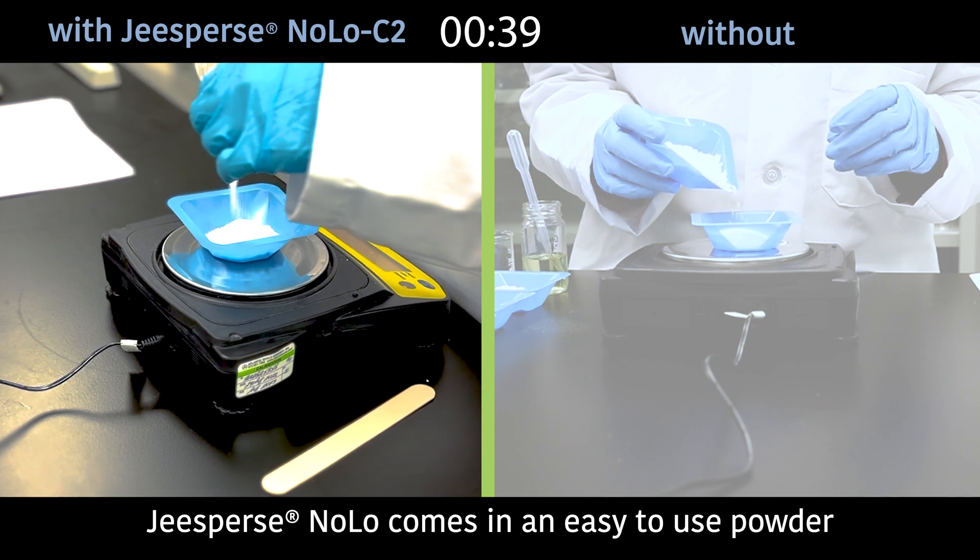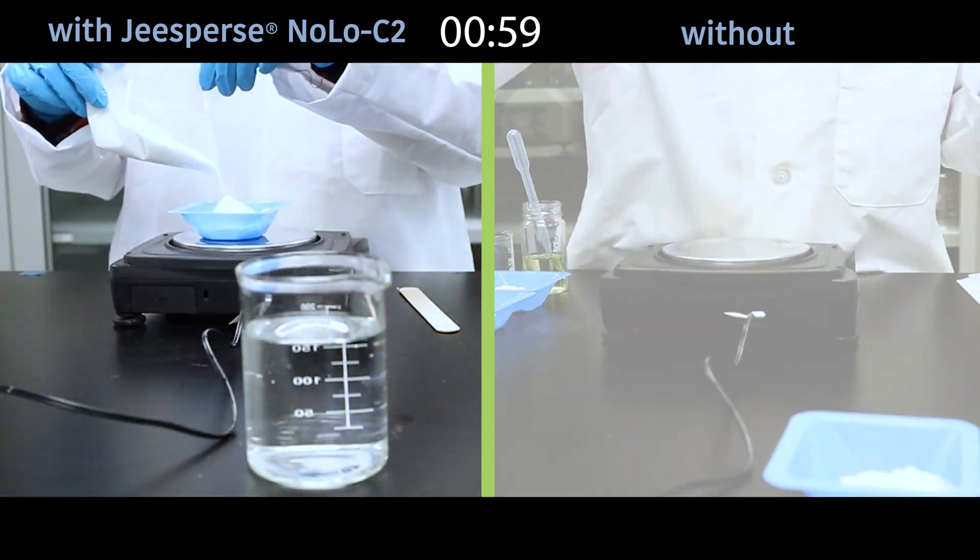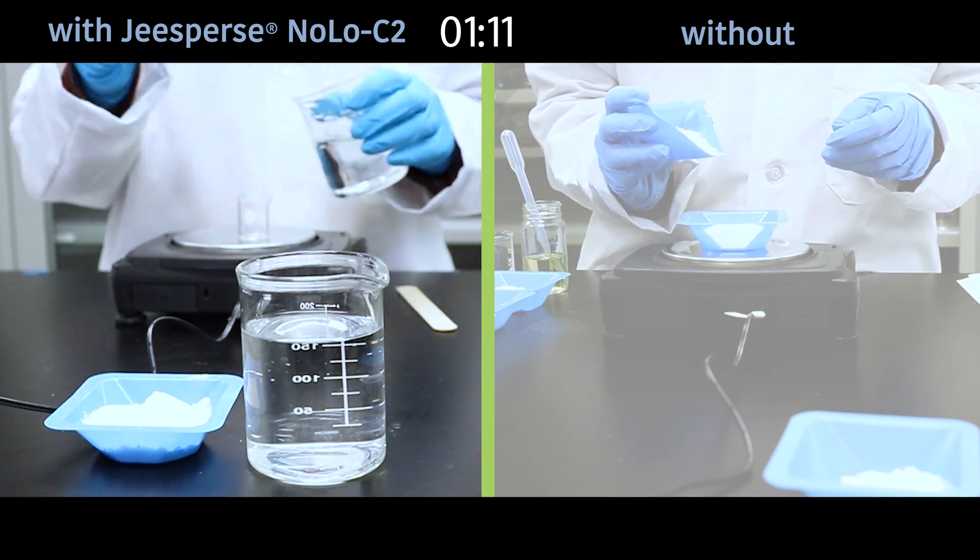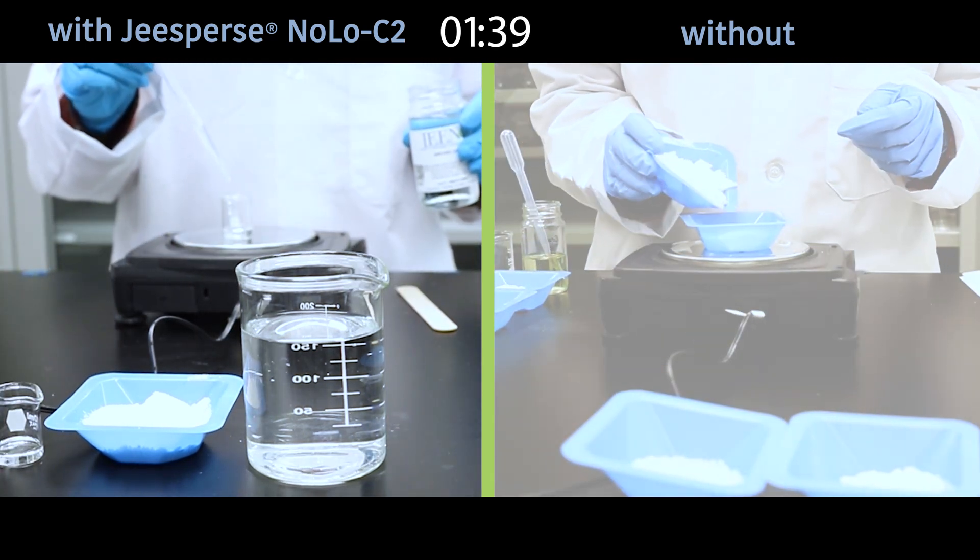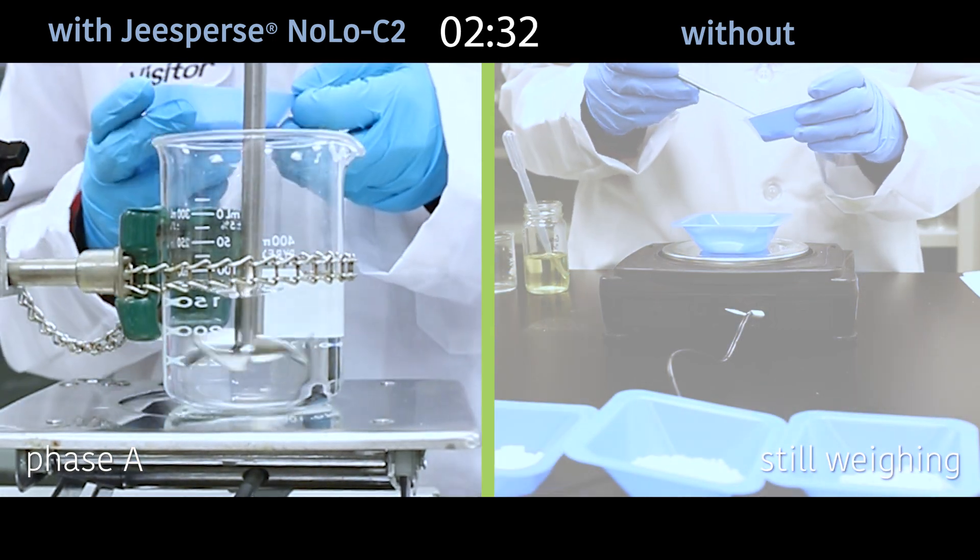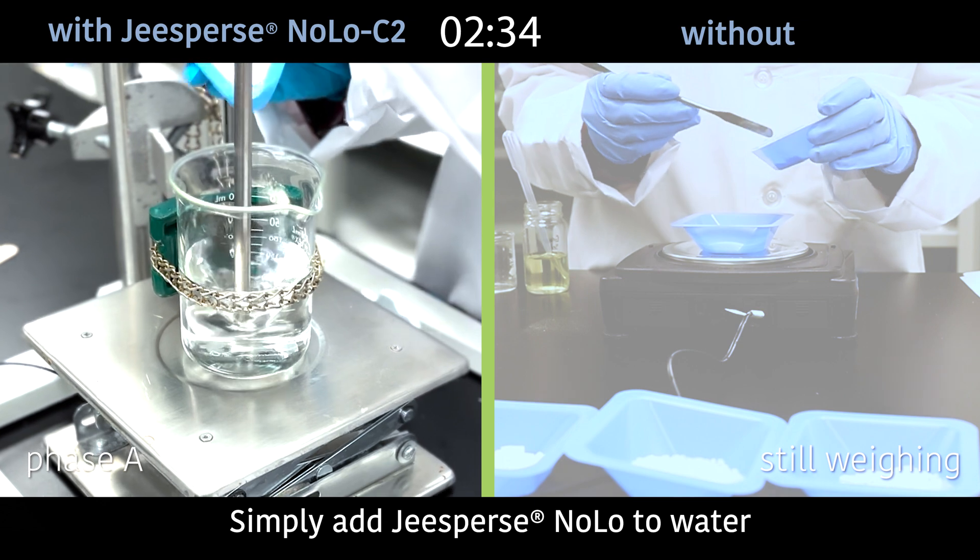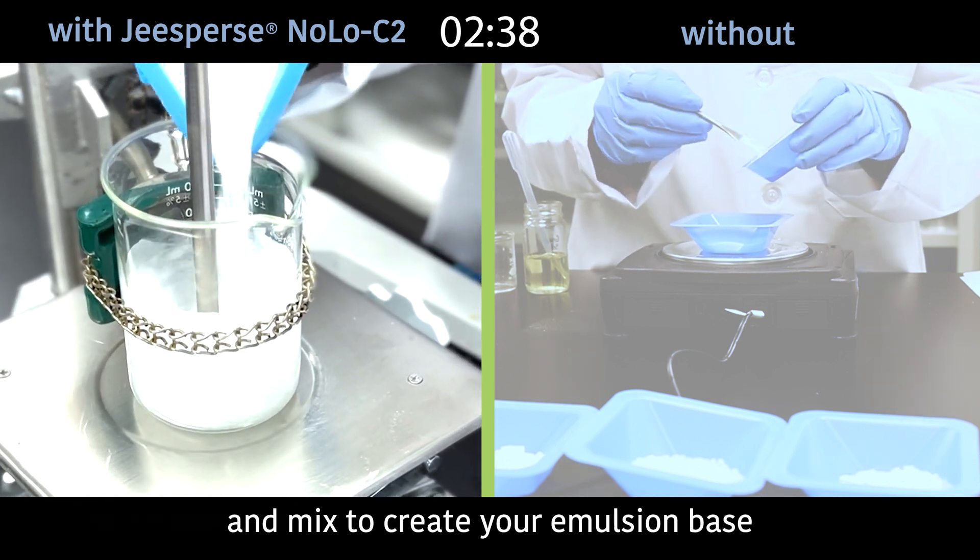Gspur Snolo comes in an easy-to-use powder. Simply add Gspur Snolo to water and mix to create your emulsion base.